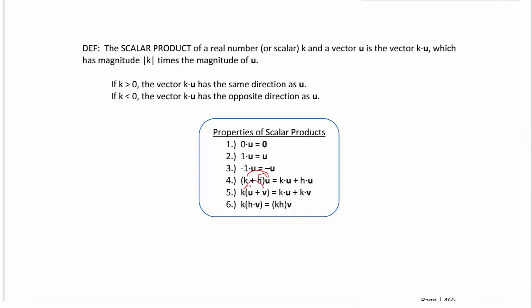And then property number six, that has to do with associativity. You can either multiply the vector by one of the scalars and then the second scalar. Or you can multiply the two scalars together first and then multiply it by the vector.